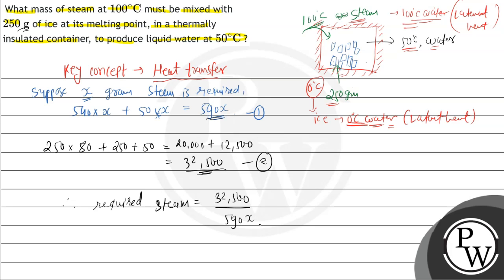So x will be here. Required x is here, so there will be cancel out at denominator. Let's make a calculation. Zeros get cancelled out, 3250 by 59, so we get nearly 55 grams of mass of steam.